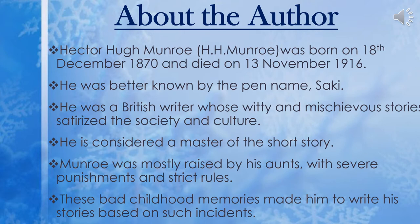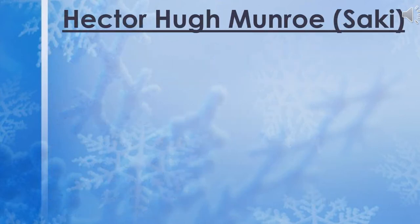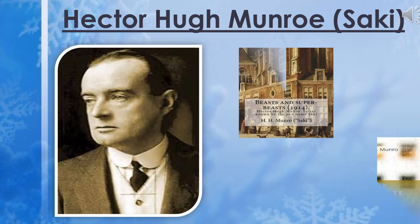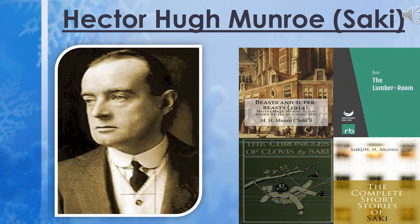In this slide you can see the picture of H.H. Munro, also known as Saki, along with four of his most popular works: 'Beasts and Super-Beasts,' 'The Chronicles of Clovis,' 'The Lumber Room' — which we are studying today — and 'The Complete Short Stories of Saki.' If you have free time, please go through these works to understand how witty and mysterious language and characters are used by Saki to bring out the themes rooted in his childhood memories.